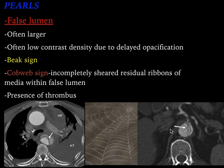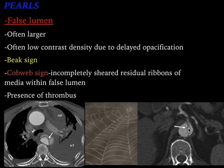Now let us see how to identify the false lumen. Usually the false lumen is larger in size, as you can see in these images. It often has low contrast density, which is due to delayed opacification of contrast. There is also the beak sign, the cobweb sign, and the presence of thrombus. The cobweb sign refers to hypodense strands within the false lumen hanging from the displaced intimal layer — these are residual ribbons of the media. The presence of these strands, resembling a cobweb, helps in identification of the false lumen.